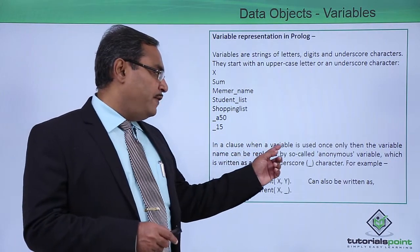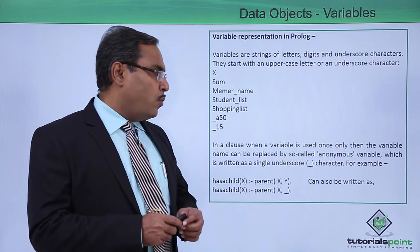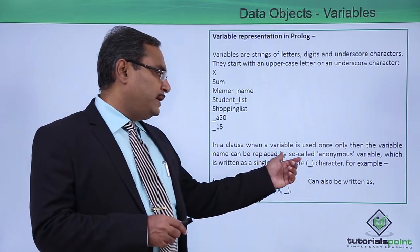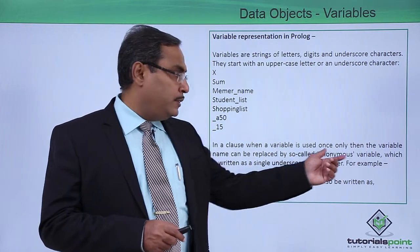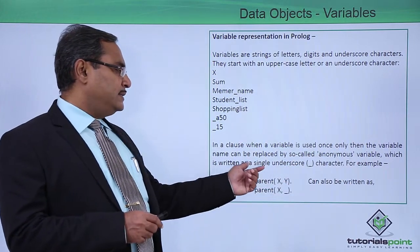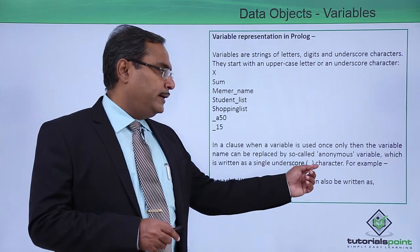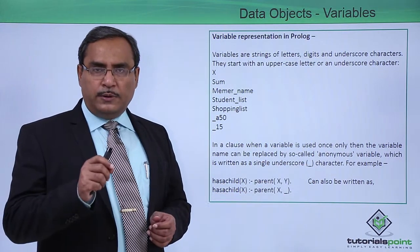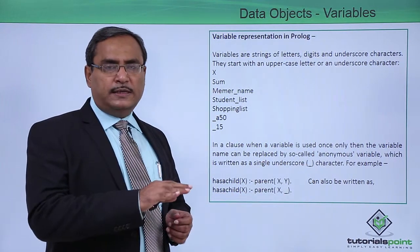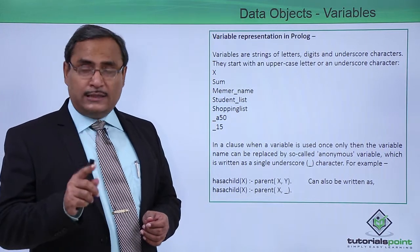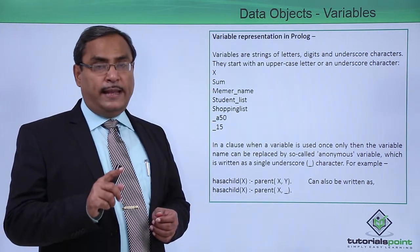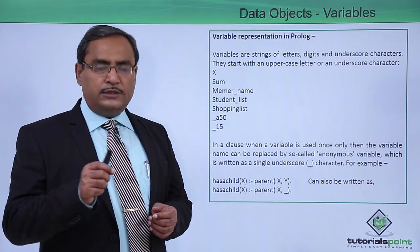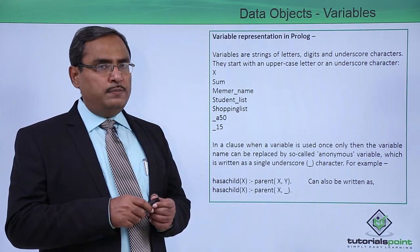In a clause where a variable is used only once, the variable name can be replaced by the so-called anonymous variable, which is written as a single underscore character. Whenever a variable appears on the left-hand side or right-hand side only once, the variable name can be replaced by an underscore — that is known as the anonymous variable.